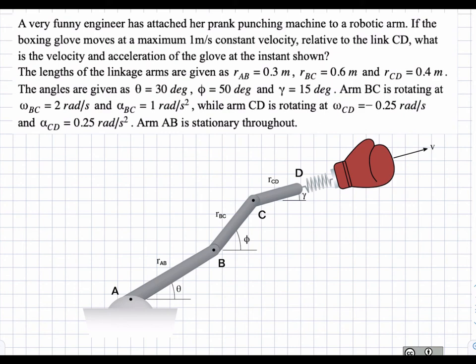In this problem, we have a robotic punching machine that moves with a velocity drawn in the direction of the diagram, and it is attached to three arms: arm AB, which is attached to BC, which is then attached to CD. We're given the angular velocities and accelerations of these arms, and we're asked to find, given that this boxing glove moves at a maximum constant velocity of one meter per second, what is the velocity and acceleration of the glove at the instant shown.